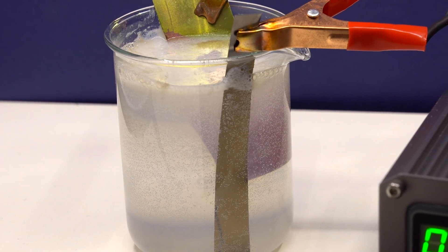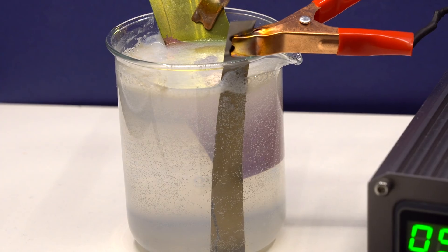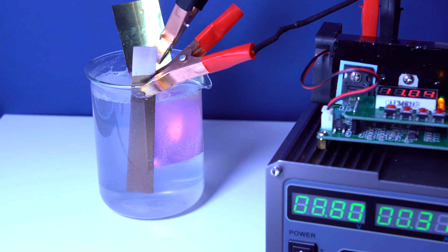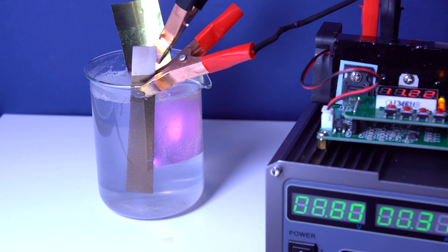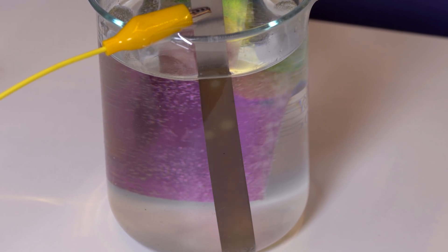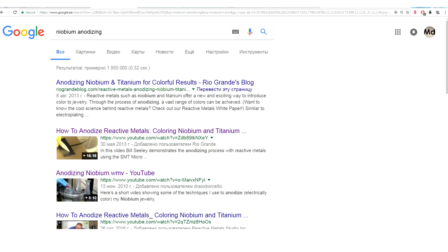Apparently, the chloride ions for niobium are much more aggressive than for tantalum. I started to think that maybe I accidentally broke my source of current. Doesn't seem so. It works just fine. Then I realized that it is most probably a matter of choosing the electrolyte, and went for an answer to the almighty internet.